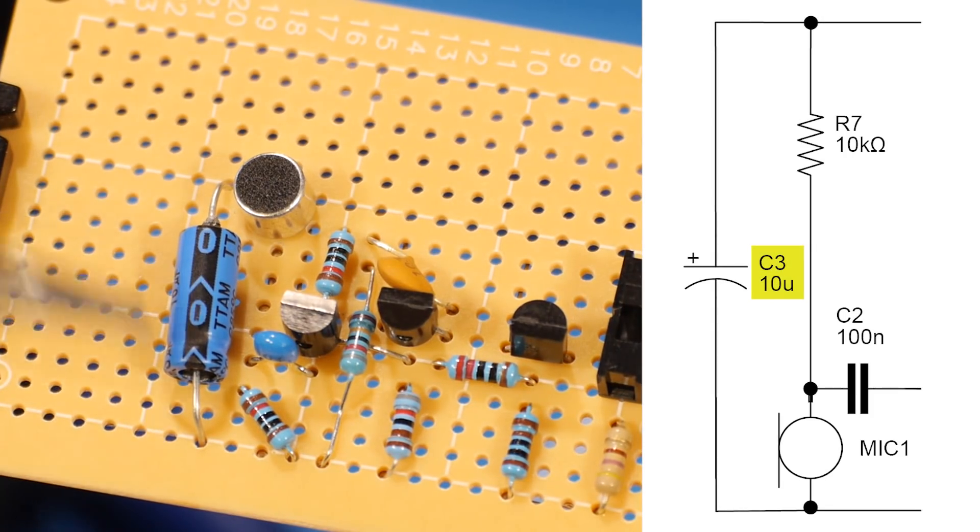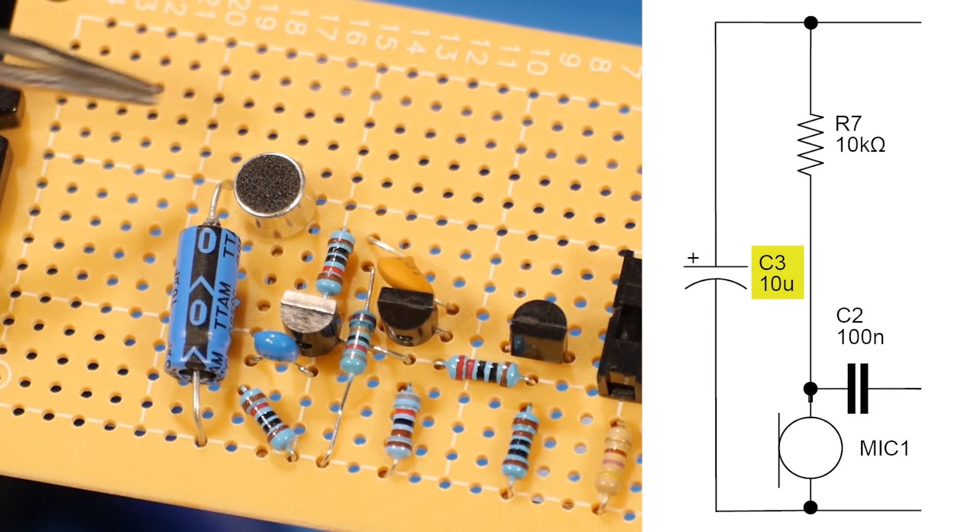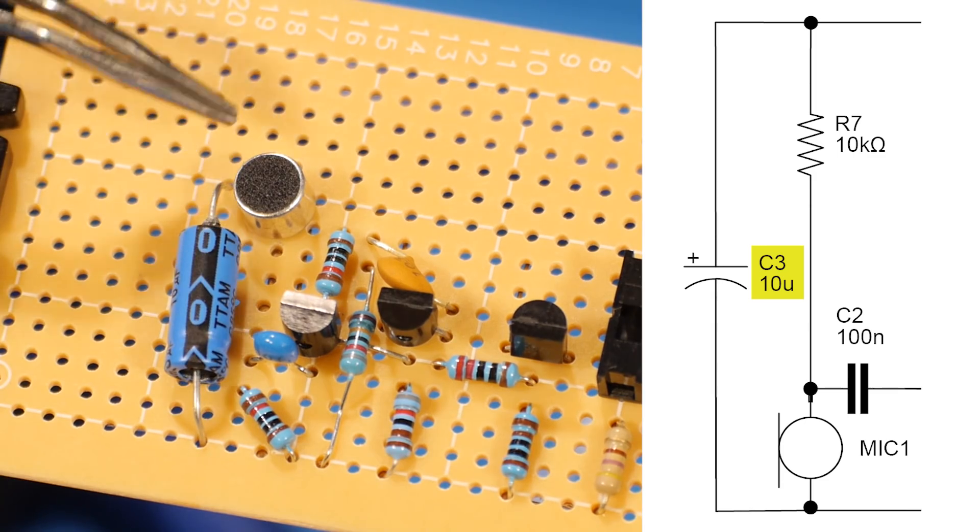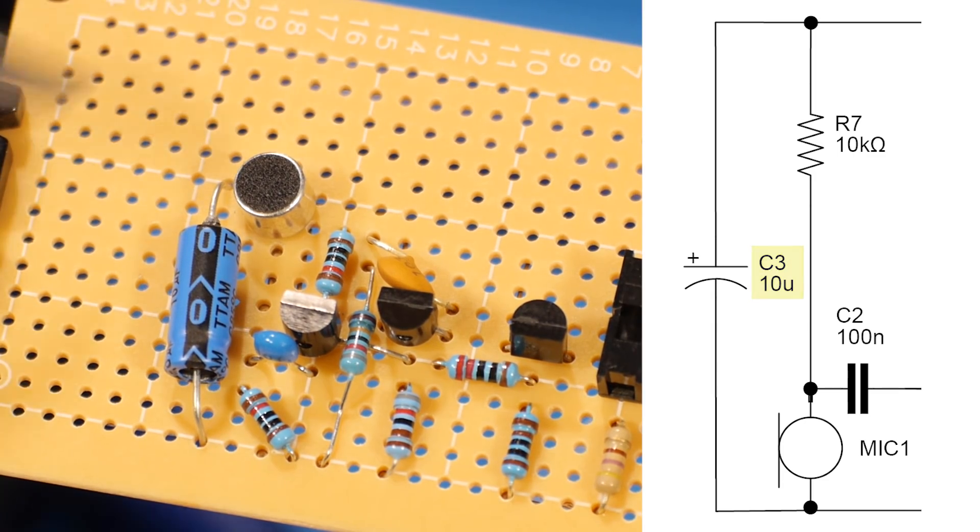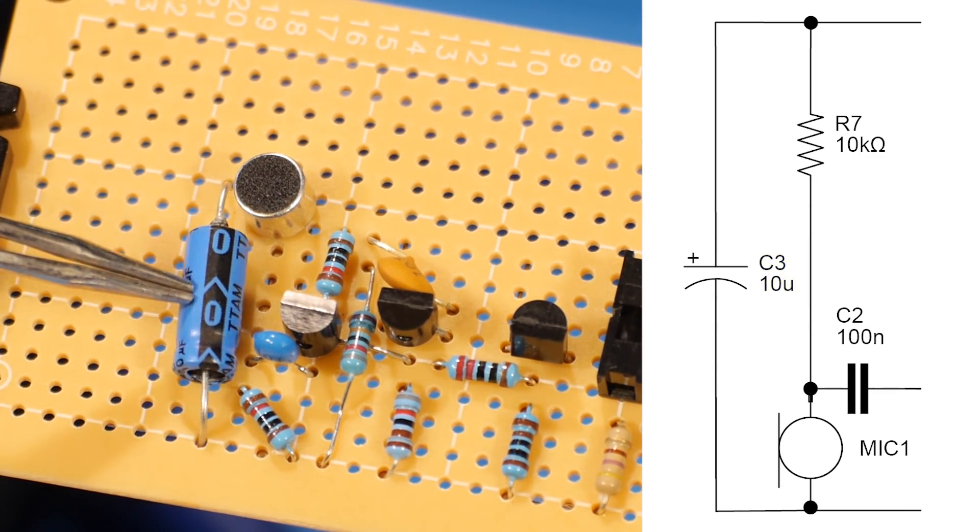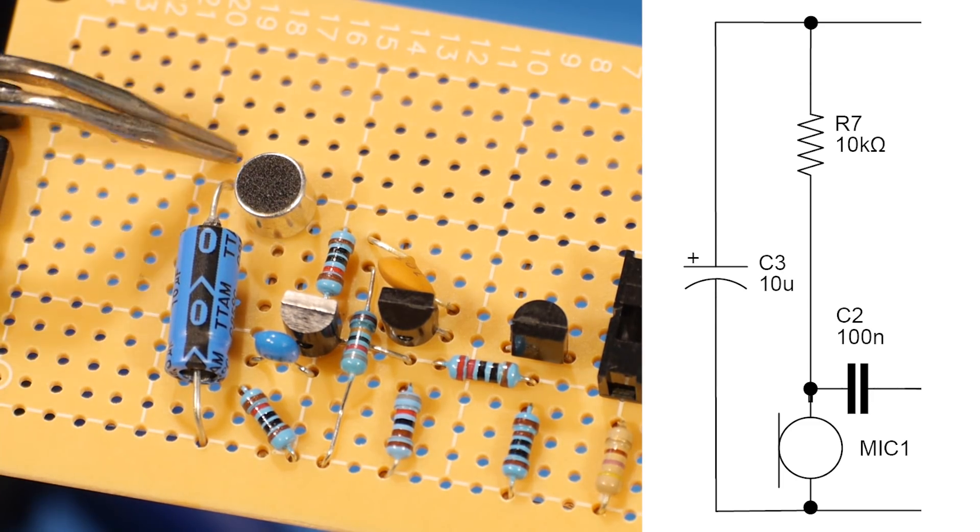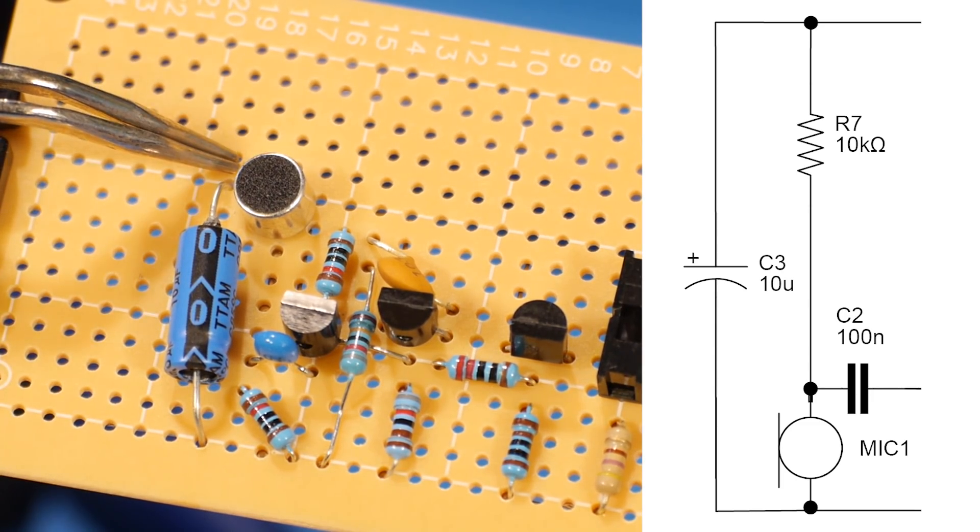We're going to place C3, our capacitor, so that it can connect easily to the power plane and the ground plane. So it's going to line up with one of the pins of the microphone. Now remember that this capacitor is polarized, so you want to make sure that the negative lead is the lower one.